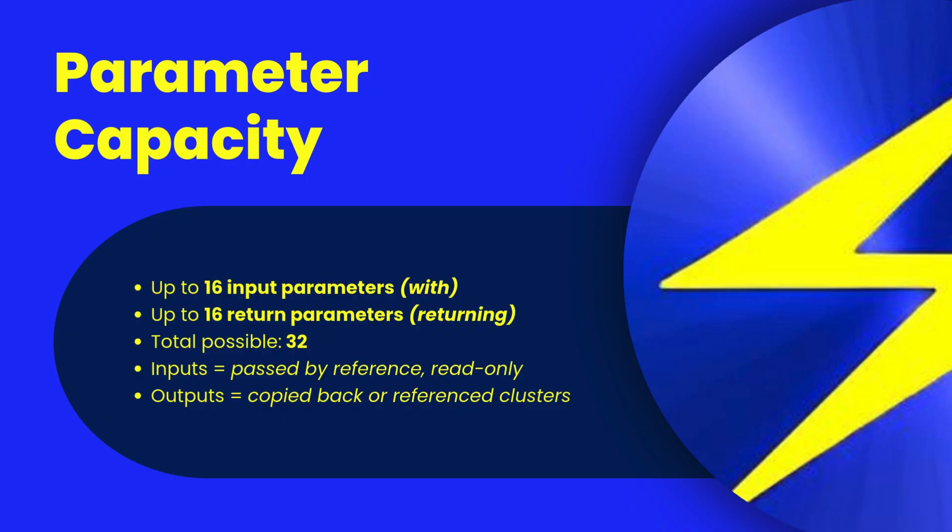Every Shear Power routine can manage up to 32 parameters: 16 can flow in using the with clause, and another 16 can flow back using the returning clause.